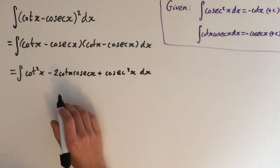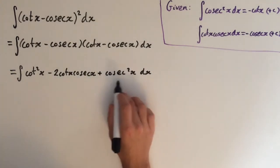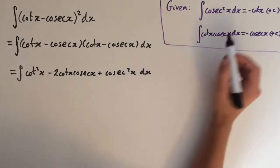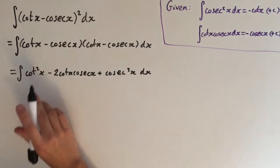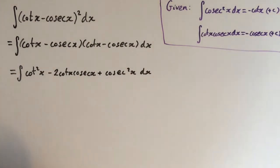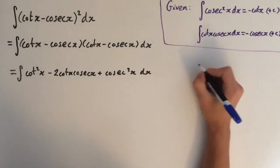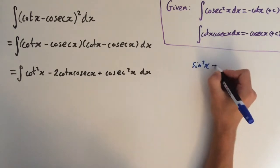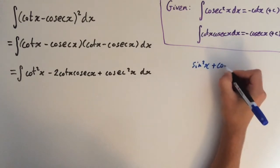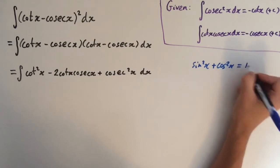As you can see, we can integrate the cos x squared term over here, but we can't integrate cot squared directly. So what we need to do is look at the identity sin squared of x plus cos squared of x equals 1.